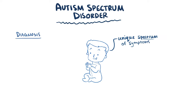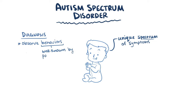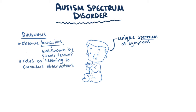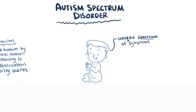Typically, clinicians will try to observe these behaviors in the child, looking for these possible deficits. Since these behaviors are often more well known by the child's caretakers than by the clinicians — like their parents or their teachers — a meaningful diagnosis of autism spectrum disorder relies heavily on listening to what others are observing at home or in school. Children might be given severity scores in each area, which can help determine how much support the child is going to need.